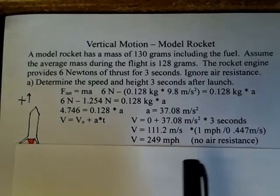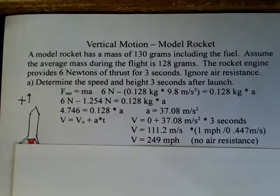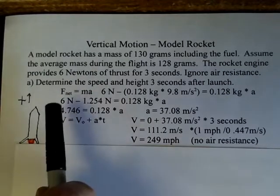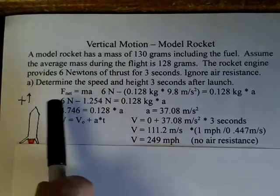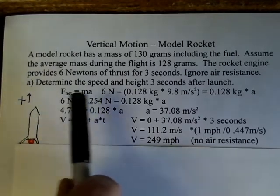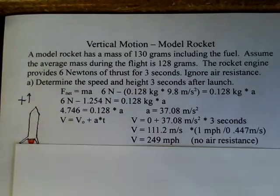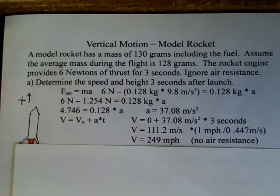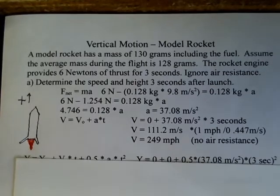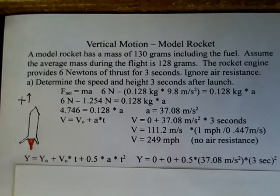This calculation ignores air resistance. In the real situation, there's an additional downward force from air resistance that varies with the rocket's speed — too complex for this simple calculation. But without air resistance, the rocket would be traveling at 249 miles per hour. Even with air resistance, the speed is pretty high.